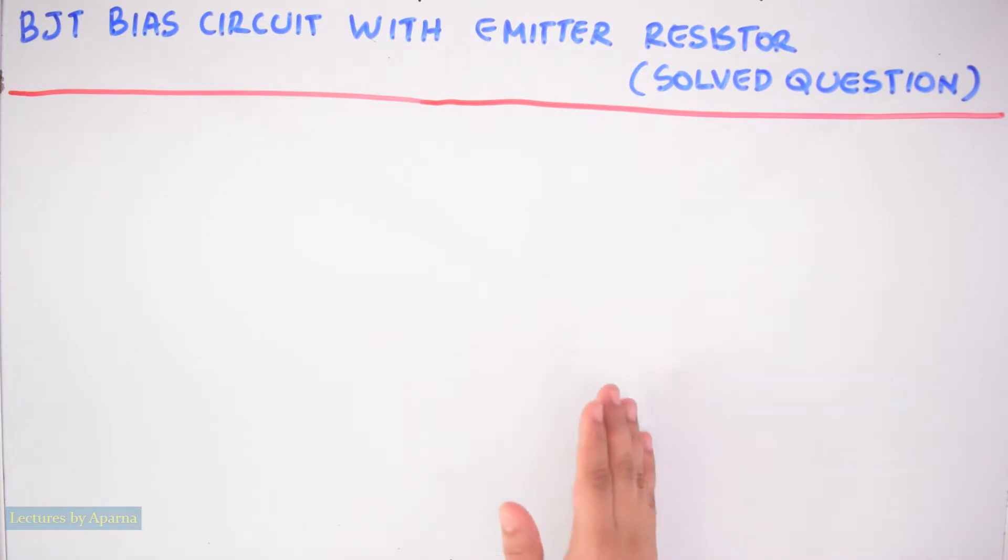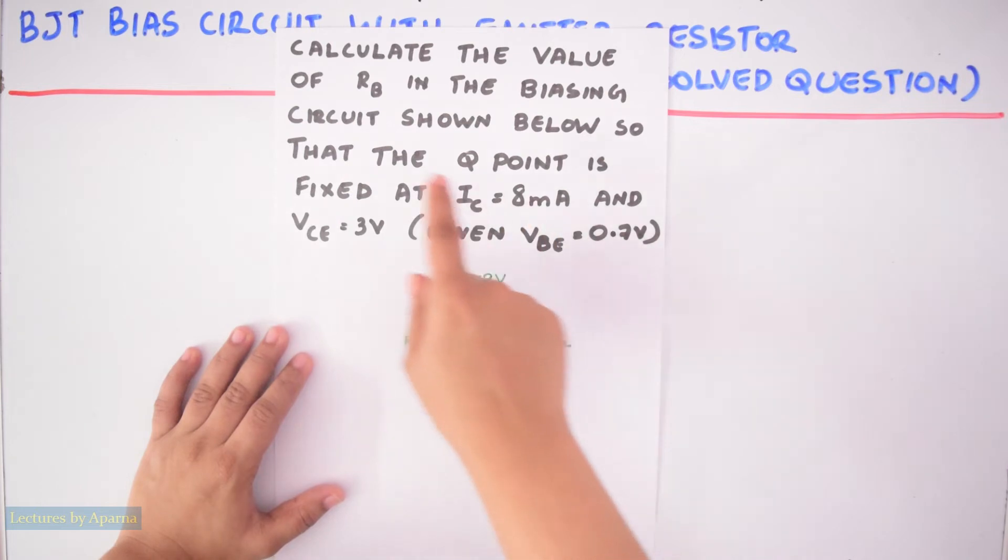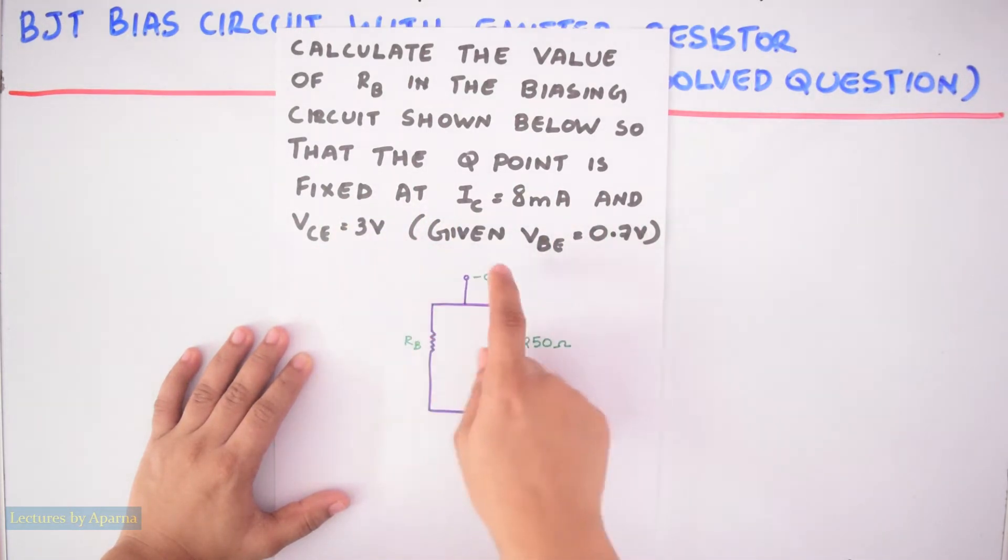To watch the theory part of this type of biasing, check out the link given in the description box just below this video. So today let us discuss this question. Calculate the value of RB in the biasing circuit shown below so that the Q point is fixed at IC equal to 8 milliampere and VC is equal to 3 volt, given VBE is equal to 0.7 volt.